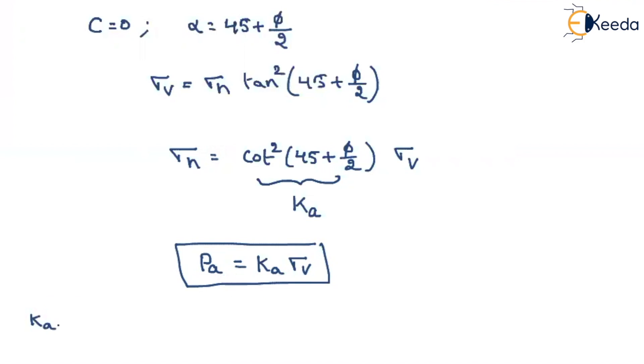So here Ka is nothing but what we can call it as active earth pressure constant. That will be equal to cot square of 45 plus phi by 2. Instead, we can easily remember with simple equation. That is, Ka that will be equal to 1 minus sin phi divided by 1 plus sin phi.